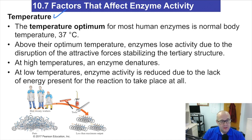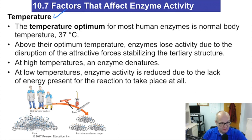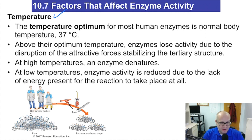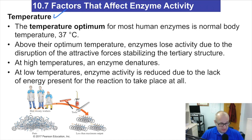Temperature — you heat up a chemical reaction and they tend to go faster. But there's a limit, because enzymes are proteins and proteins denature if you get them too warm. Obviously if you go too cold, the enzyme will slow down to the point where it won't work anymore — the kinetic energy just isn't there. There is a temperature sweet spot; in our body, around 37°C is probably where they like to be. Too cold, they start shutting down; too hot, they start to denature.